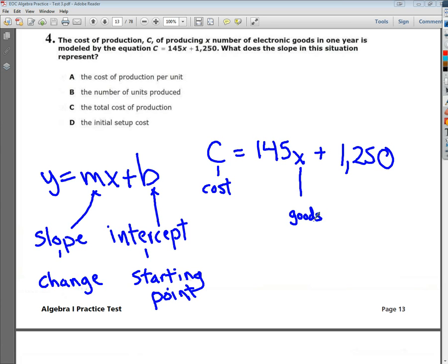My 1,250, I said it's a starting point. So really, if I made the goods value zero, then it's still the cost that exists without anything. So my $1,250 is my upfront cost, or the cost of doing business.